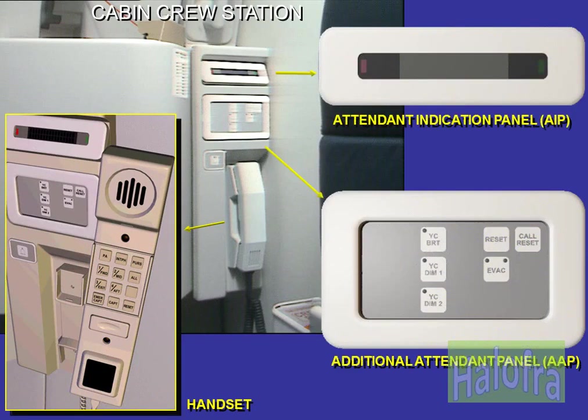Each crew station is equipped with a communication system including a handset, an attendant panel, FAP or AAP, and an attendant indication panel, AIP.